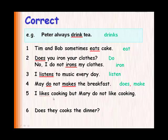I likes cooking, but Mary do not like cooking. The correct version is: I like cooking, but Mary doesn't like cooking. Does they cook the dinner? That's wrong — they does not take does. Do they cook the dinner? That would be the correct one.